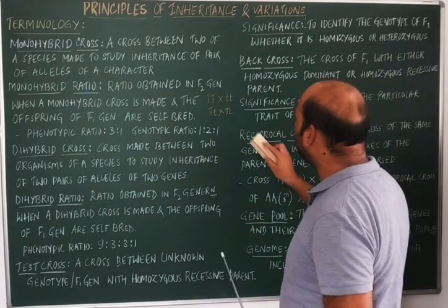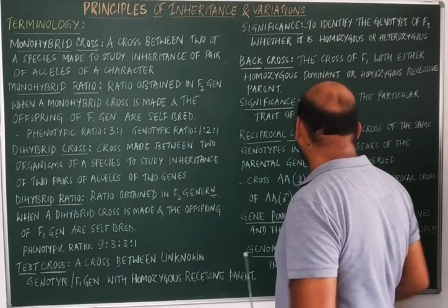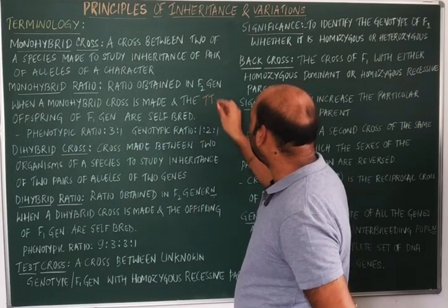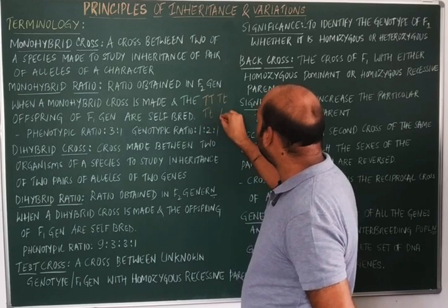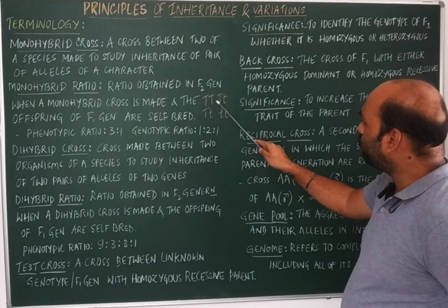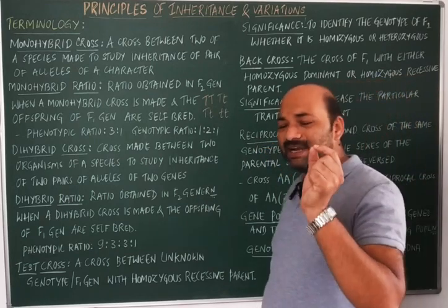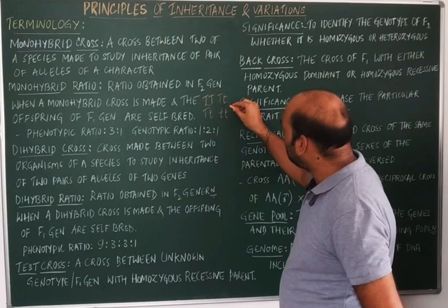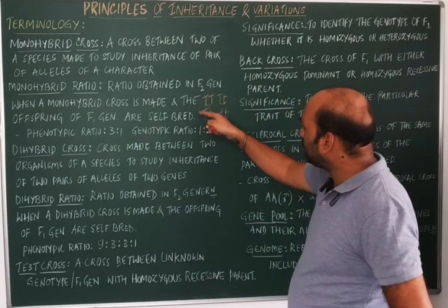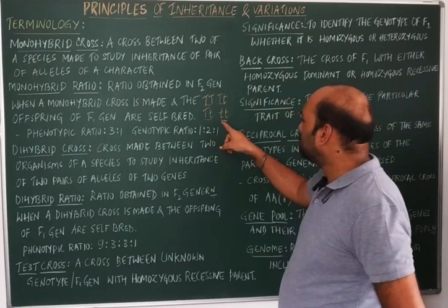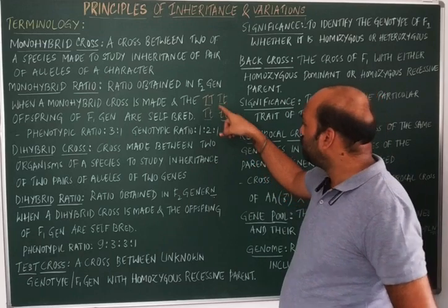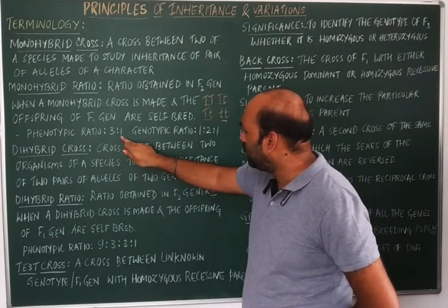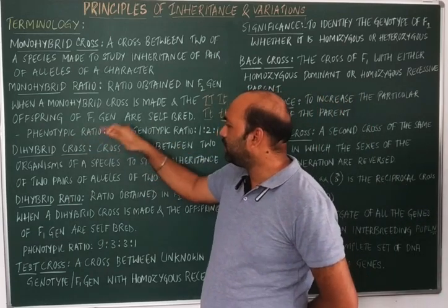In the monohybrid ratio, the phenotypic ratio observed in the F2 generation is 3:1. The four individuals seen are TT, Tt, Tt, and tt. TT and Tt represent tall plants, and tt represents the dwarf plant. So the phenotypic ratio is 3 tall to 1 dwarf.